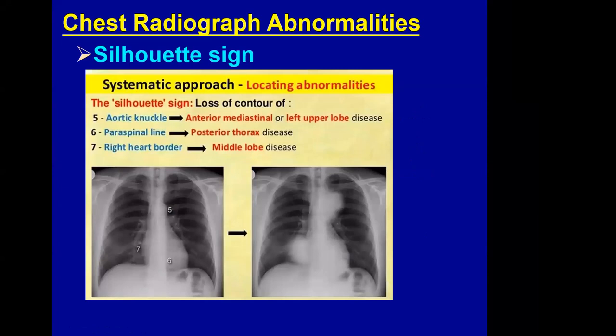On the left film, there is an infiltrate but because the heart border is clear, that infiltrate is posterior to the heart. On the right film, there is an infiltrate and the cardiac border is invisible, meaning the infiltrate is located anterior to the heart.